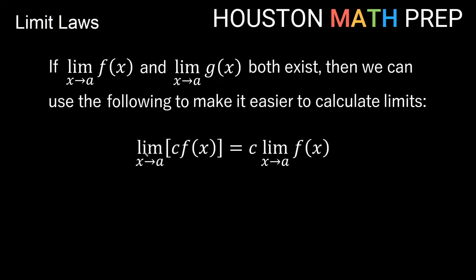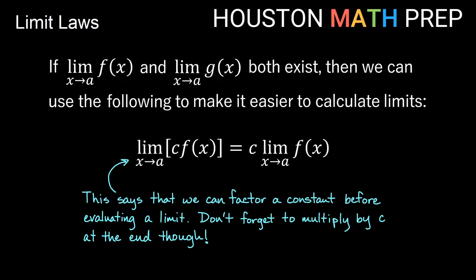The next rule says the limit as x approaches a of some constant multiple of a function equals the constant multiple times the limit of the regular function. This basically says we can factor out a constant multiple before evaluating a limit — we just need to remember to multiply by that constant at the end when finding our limit.